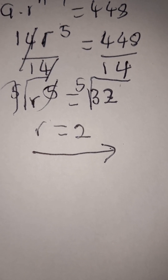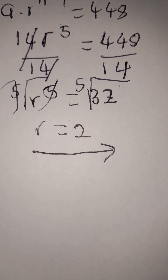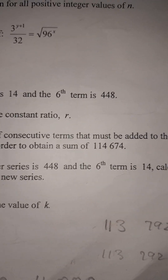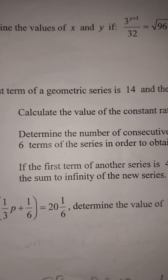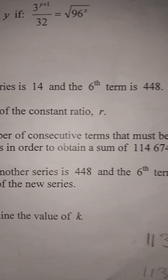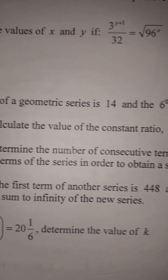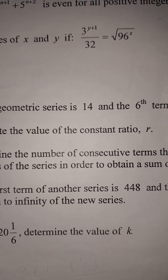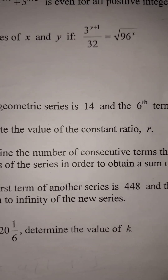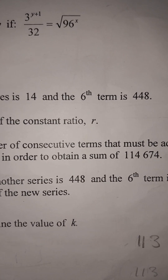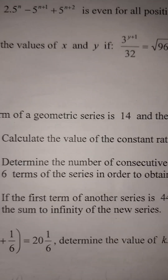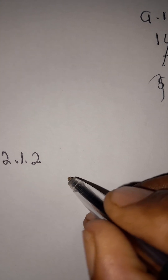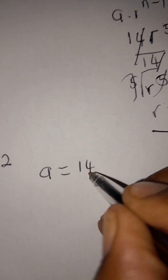Now at 2.1.2: determine the number of consecutive terms that must be added to the first six terms of the series in order to obtain a sum of 114,674. Collect the data first: a = 14, r = 2, Sₙ = 114,674. We are looking for n.